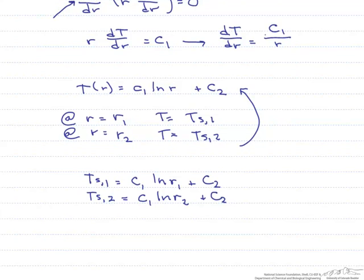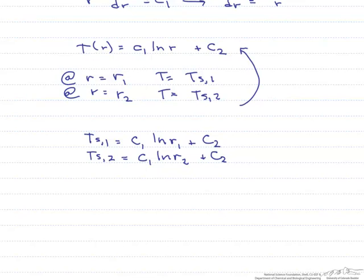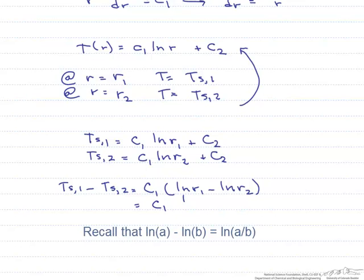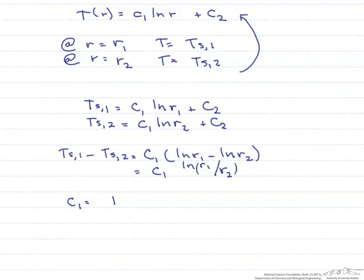The easiest thing to do to start solving for these constants is to subtract one equation from the other. We get Ts,1 minus Ts,2 equals c1 ln(r1) minus ln(r2). Our c2 drops out, and we can write this as c1 ln(r1/r2). So that allows us to solve for our constant c1, which equals Ts,1 minus Ts,2 divided by the natural log of r1 over r2.